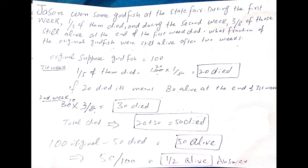Jason had goldfish in the first week and second week where some died. The original number of goldfish is not known. We suppose that goldfish was 100.